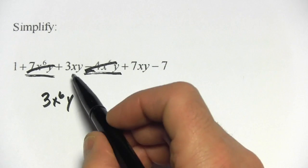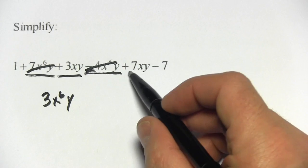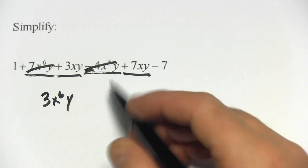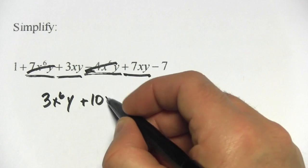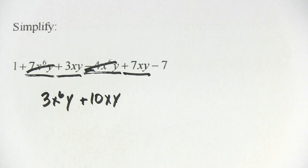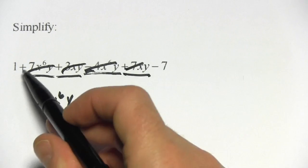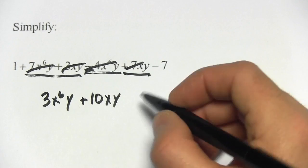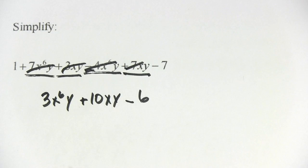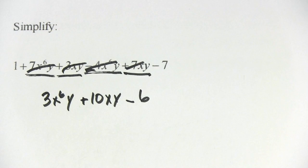Let's look at the next part. We have xy terms, so a positive 3xy and a positive 7xy. 3 plus 7 is 10, so that's 10xy. And then what's left over is a 1 and a negative 7. You add those together, you get a negative 6. And that is our simplified answer.